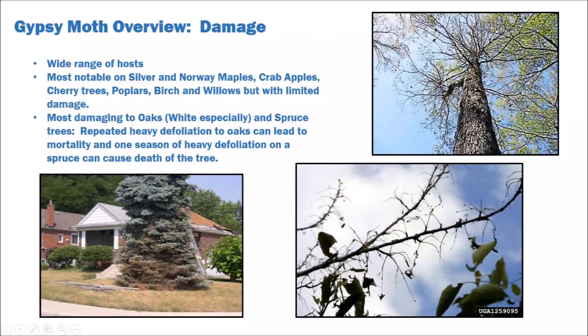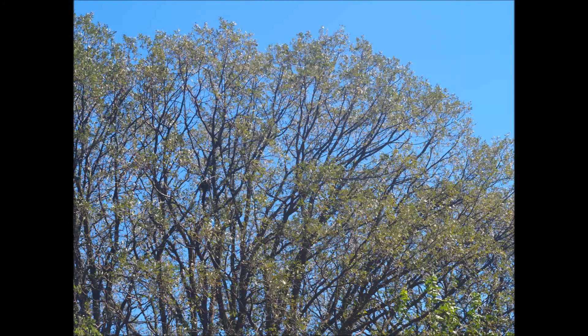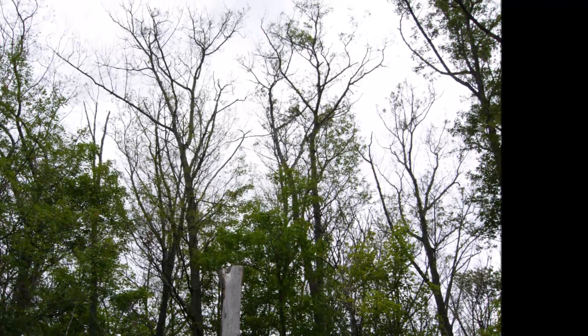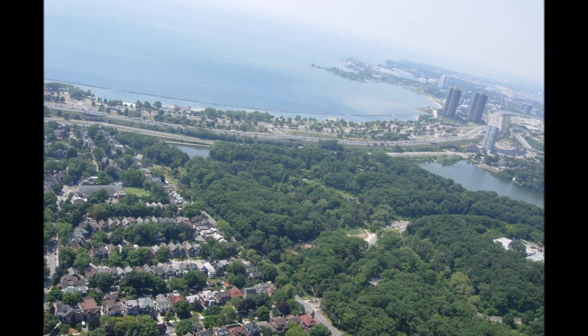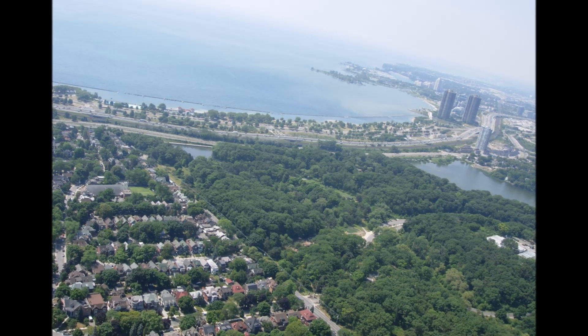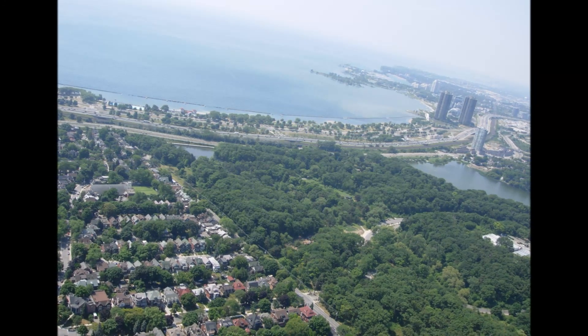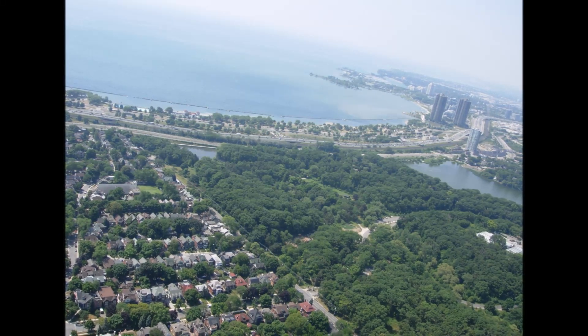Gypsy moth feeds on a wide range of hosts, most notably silver and Norway maples, crab apple trees, black cherry trees, poplars, birches, and willows. Although feeding can happen on these trees, most of them can recover and regenerate foliage throughout the summer season. Oak trees and spruce are the most susceptible to severe feeding and have great difficulty recovering from loss of foliage. Repeated heavy defoliation on oaks can cause mortality. This is why the city focuses on neighborhoods with valuable mature oak-dominated canopies. When we have a dominant stand of oaks facing severe defoliation, we risk losing very important canopy cover.